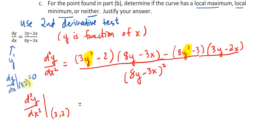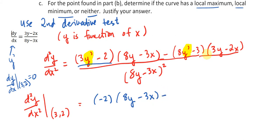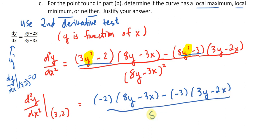Knowing that dy/dx equals 0 makes our lives much easier, because instead of plugging in dy/dx and getting a huge mess, we can substitute directly. The numerator's first term becomes just negative 2 times (8y − 3x), and the second term — since 8 times 0 is 0 — reduces to negative 3 times (3y − 2x), all over (8y − 3x) squared.